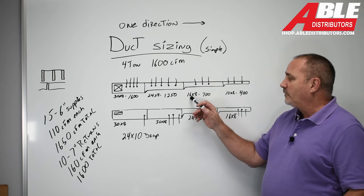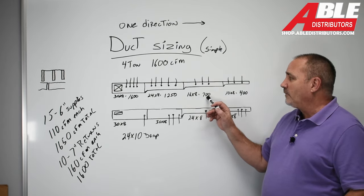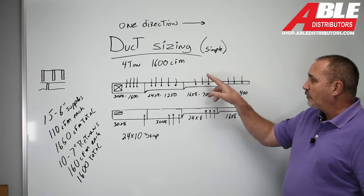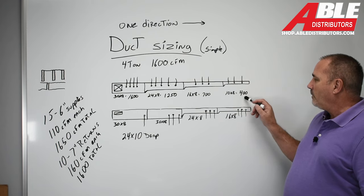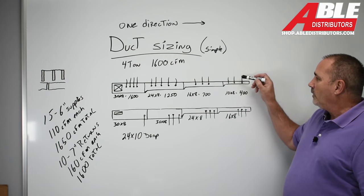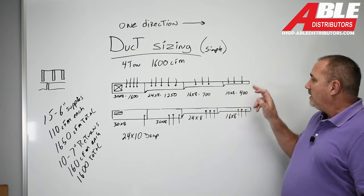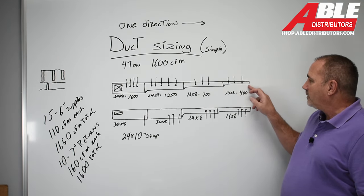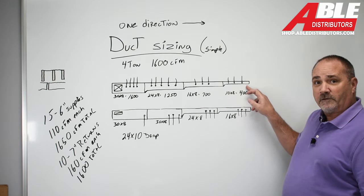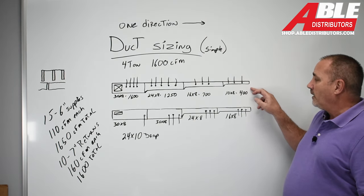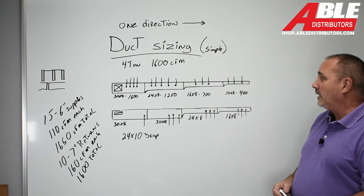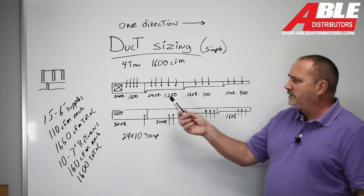We've marked down to 16 by 8, which is capable of 700 CFM. We took three more supplies off of that. We stepped down to 10 by 8, which is capable of 400 CFM. We only have three supplies coming. You never take one off the end cap. You should never be within a foot of the end cap if you can avoid it. Even if you had to take it off the side and step it out, it's the right way to go rather than taking off the end cap.